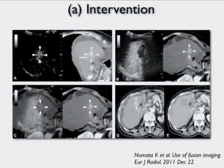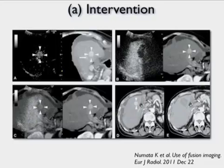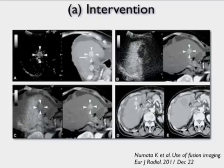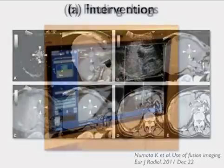The first is multi-modality image fusion, which, as you can see from these images from the literature, refers to fusion of ultrasound images with CT, and it could also be with MR images in real time. Other institutions have had a fair bit of experience with this and are finding it to be extremely helpful, particularly in intervention, as shown here.